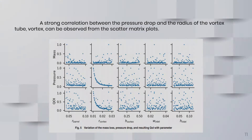A strong correlation between the inlet parameters and the outlet vortex radius can be observed. Two vortex structures can be observed from the scatter matrix plot. The relationship between input parameters and quantities of interest is shown.